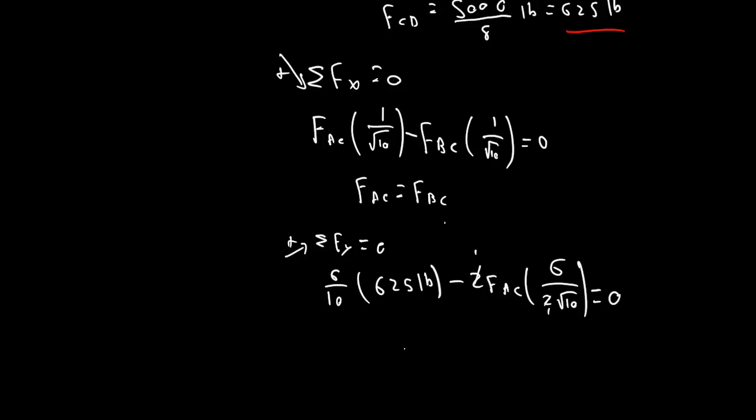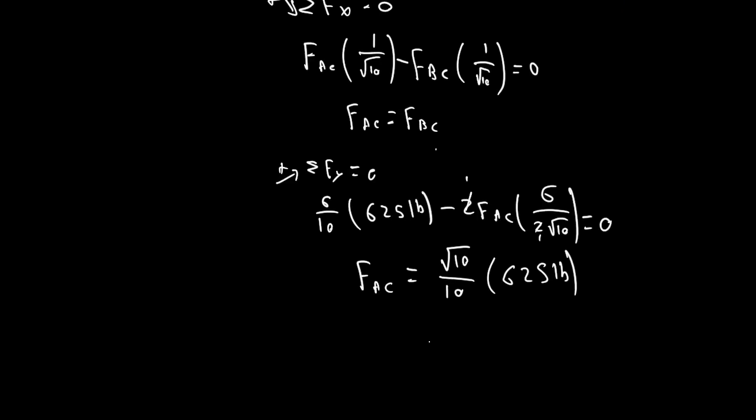So, anyway, we're going to get Fac equals, let's see here, 6's are going to cancel out. We're going to get root 10, root 10 over 10. 6's are going to cancel out, times 625 pounds. And, what is that equal? That equals a very interesting number, doesn't it? Equals, we're going to get 197.6, or approximately 198 pounds.